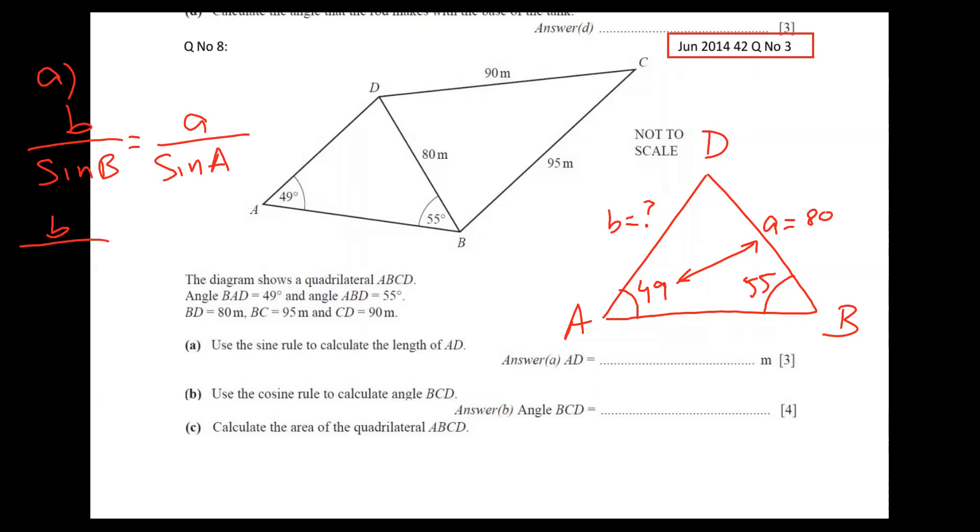What is sine rule? Because side is unknown, I will keep sine up. Part A: B by sine capital B equals small a by sine capital A. Just plug in the values. Capital B is 55 degrees, so I'm writing here 55 degrees. Small a is 80, so 80 here.